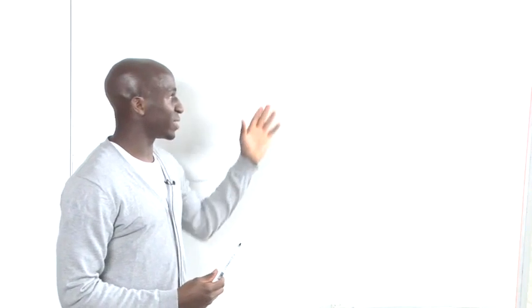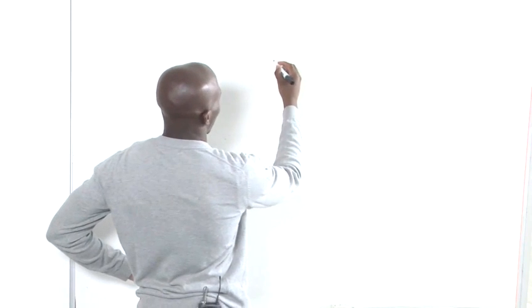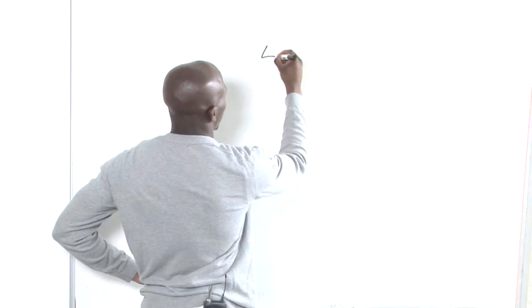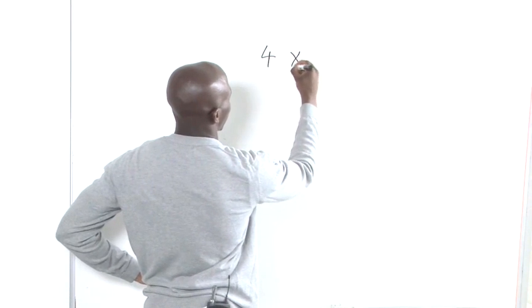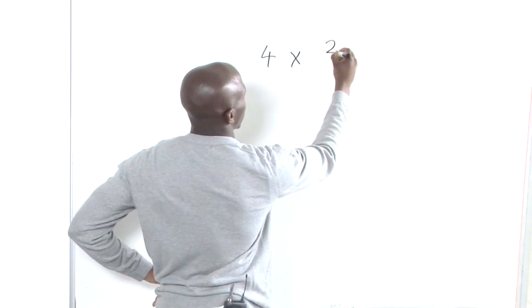Hi, I'm going to show you how to multiply whole numbers by fractions. So the first thing we want to do is write out our basic sum. And we have 4 multiplied by 2 thirds.